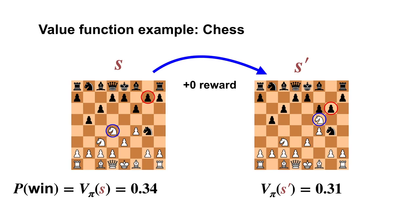An action value function would allow us to assess the probability of winning for each possible move, given we follow the policy π for the rest of the game.